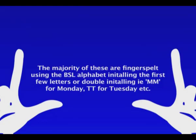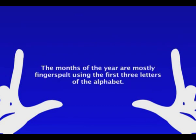The majority of these are fingerspelt using the BSL alphabet, initialing the first few letters, or double initialing — i.e., MM for Monday, TT for Tuesday, etc. With the months of the year, they are mostly fingerspelt using the first three letters of the word.